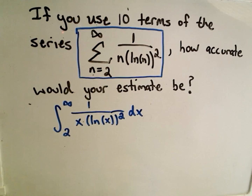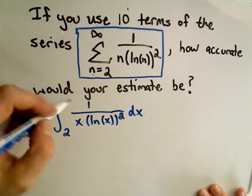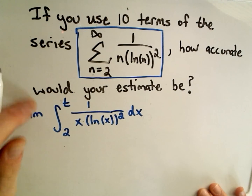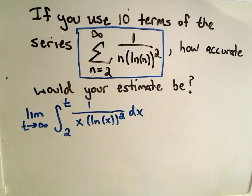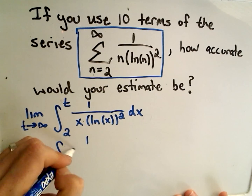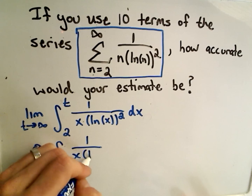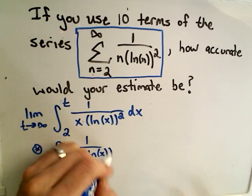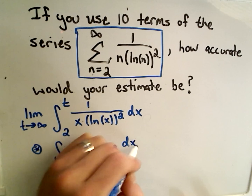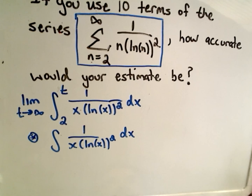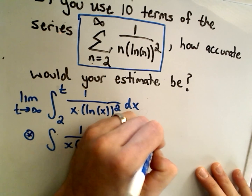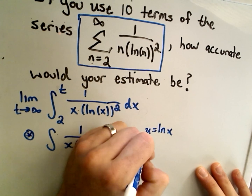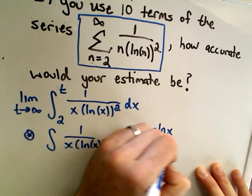To integrate this, we replace our upper limit of integration with t and let t go to infinity. We integrate 1 over x times the natural logarithm of x quantity squared dx. We can integrate this using a u-substitution: let u equal the natural logarithm of x, so du equals 1 over x dx.